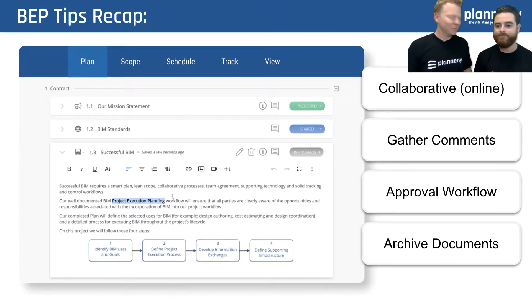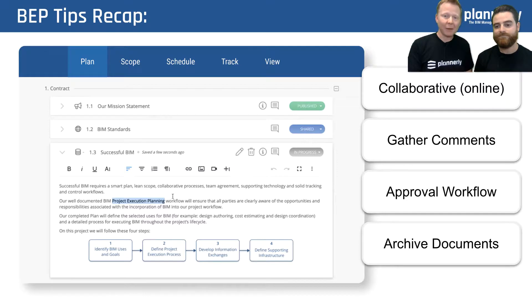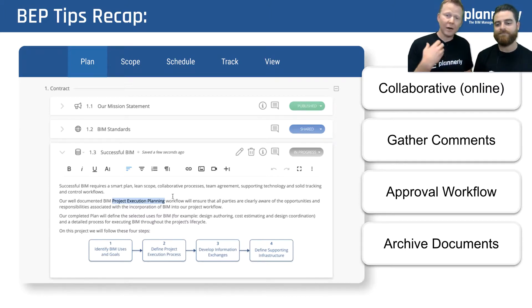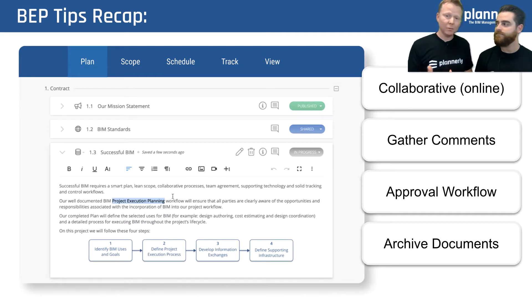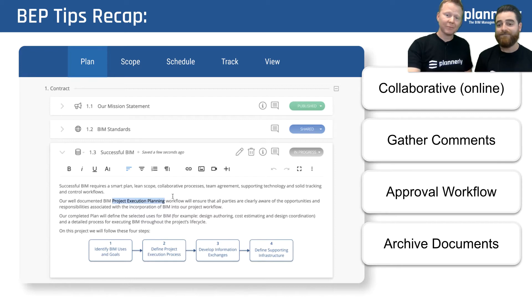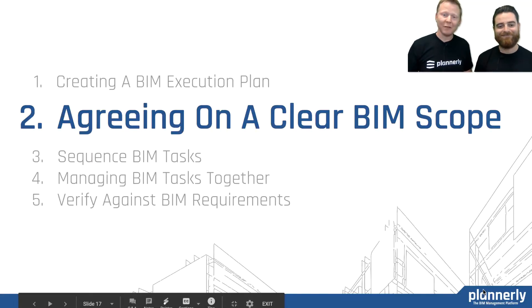Quickly recapping on number one — BIM execution planning and helping that to be successful as part of your BIM management workflow. We see huge success when it's online and collaborative, and much more buy-in when people's comments are part of that documenting process. Having an approval process in bite-sized form, being able to approve certain parts and archive along the way, gives security in knowing what versions have been released — and being able to access it because it's always live.